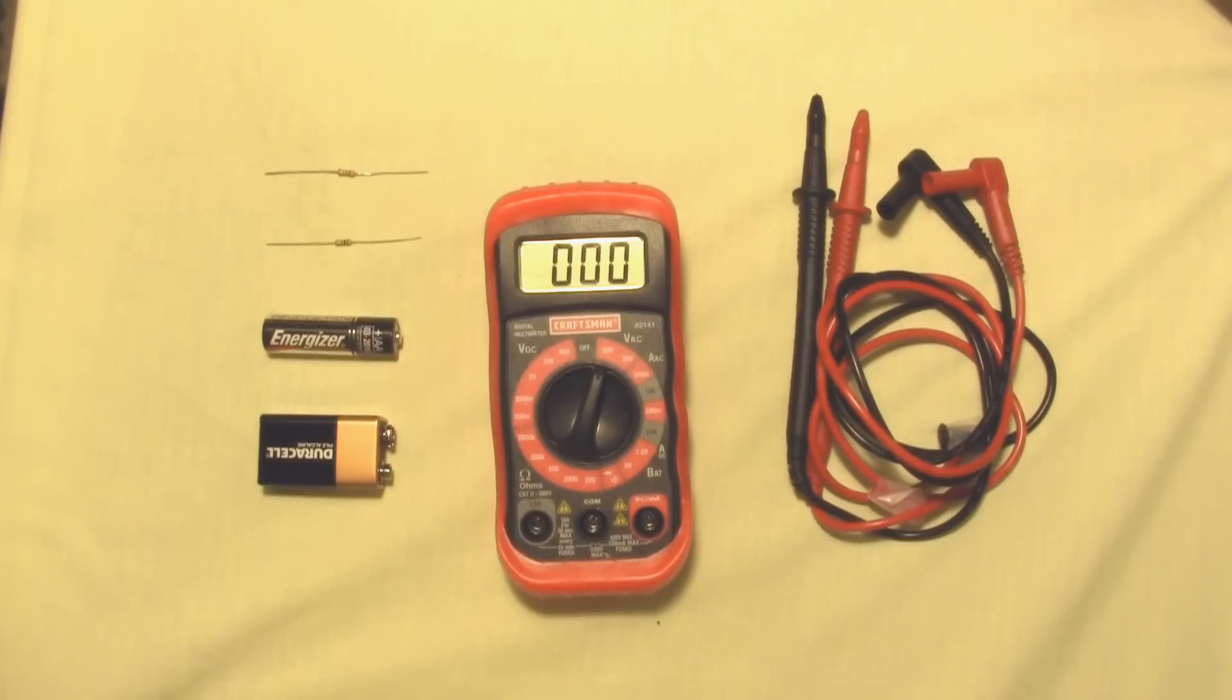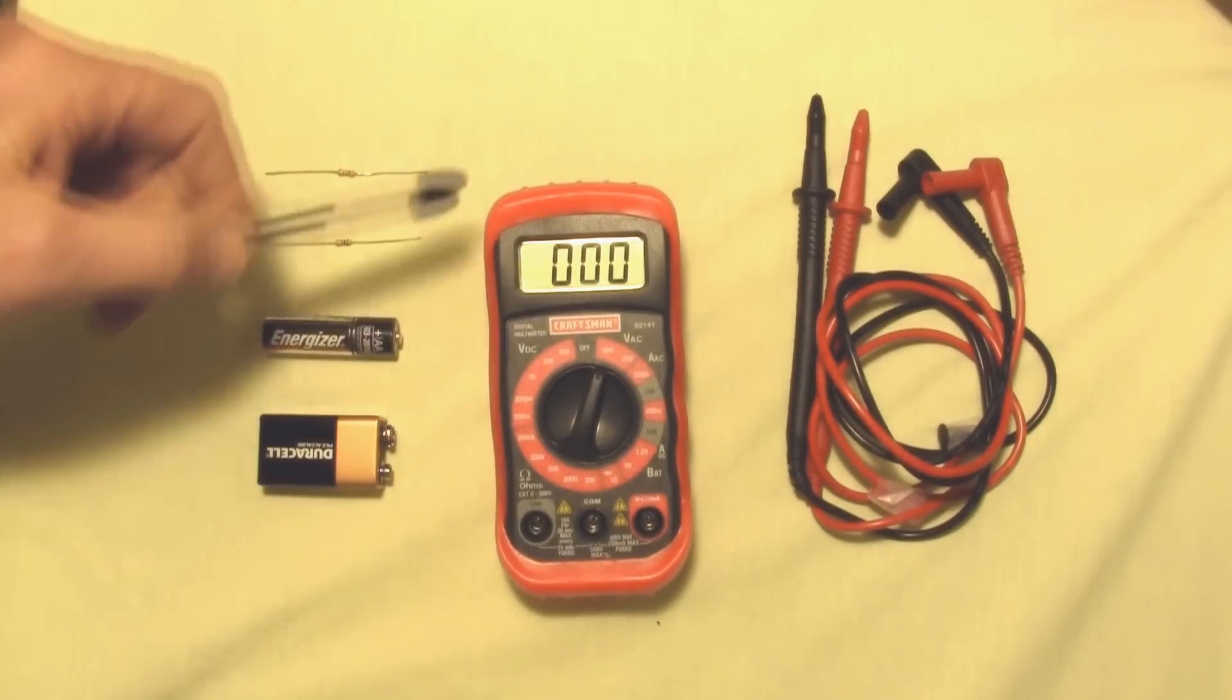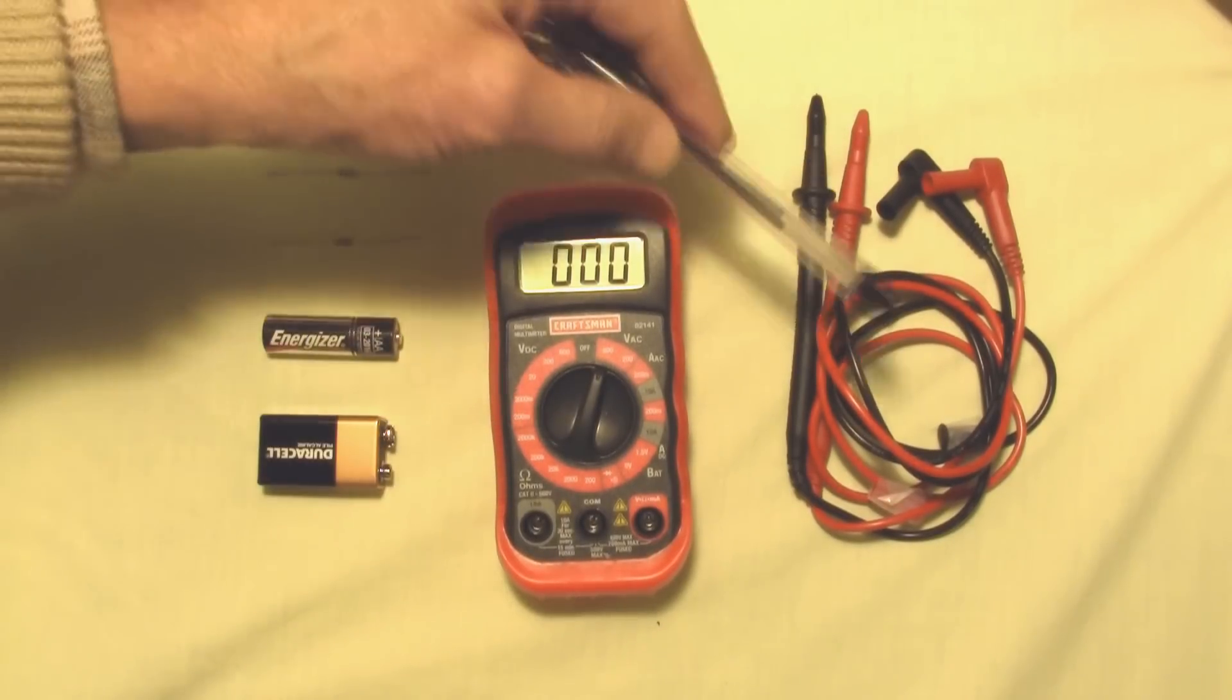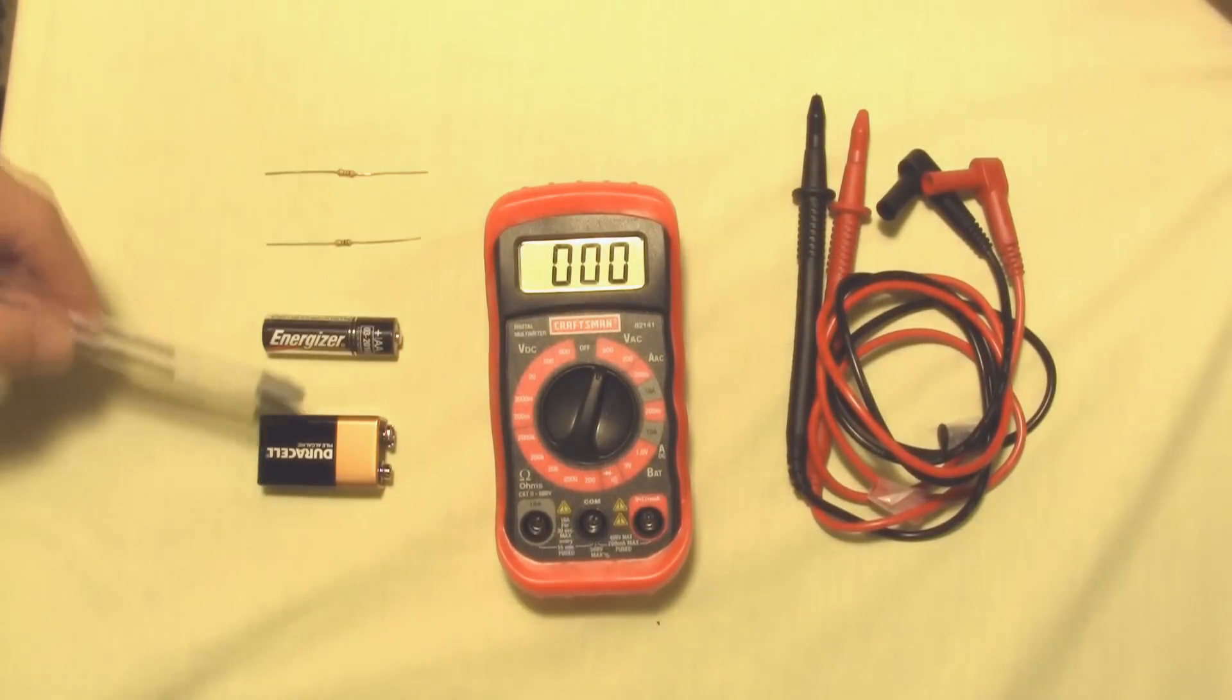Let's look at some of the functions. First of all, the basic instrument here with the function switch, the test leads over here. We just have a few things that we're going to measure, a couple of battery voltages and a couple of resistors. We're also going to measure the voltage AC out of a regular outlet. And then in future lessons, we'll show you how to use more sophisticated measurements.